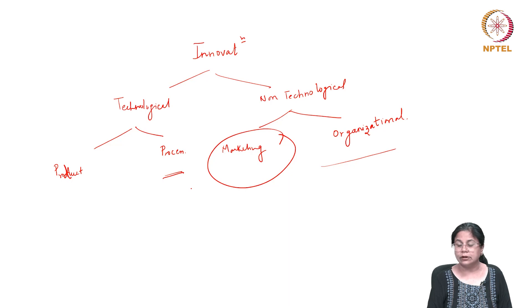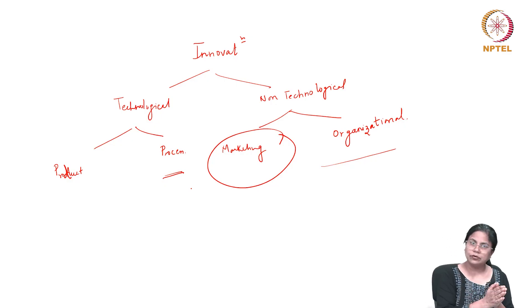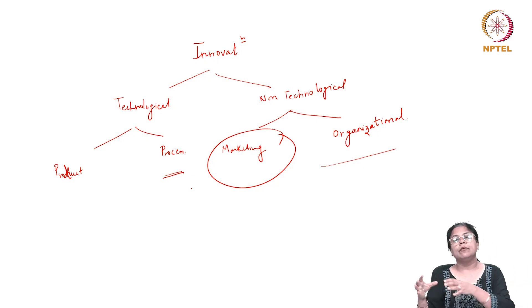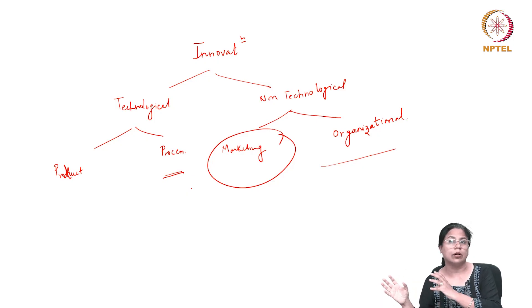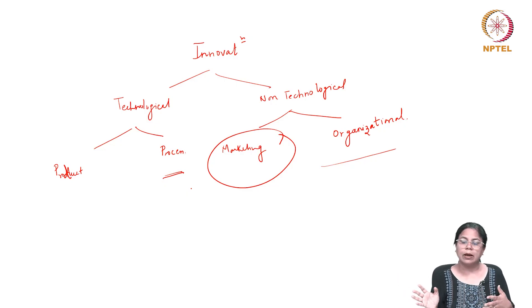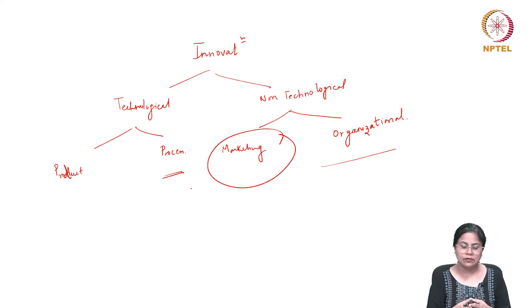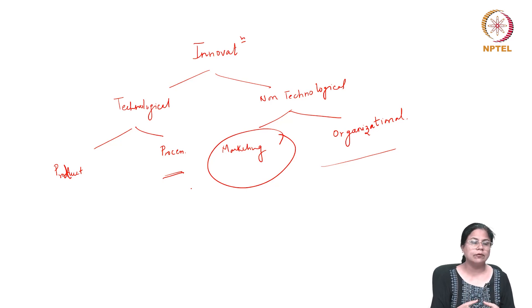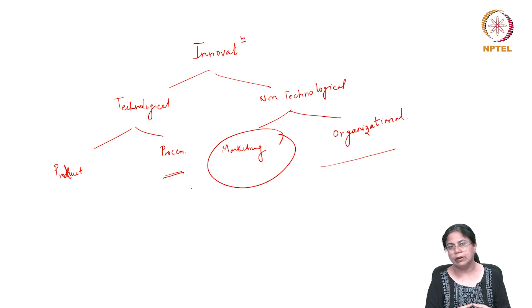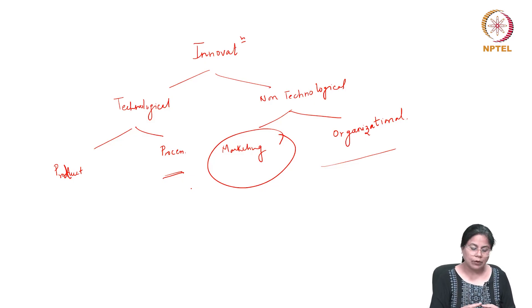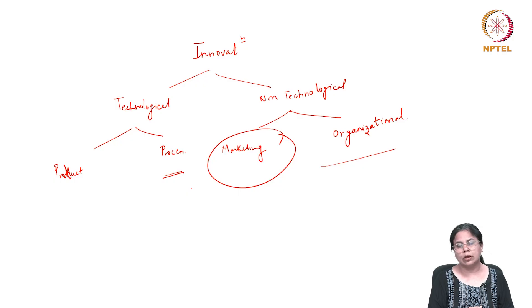Broadly, one way to understand the different types of innovation is to define them with respect to technological and non-technological innovation. In technological innovation, we look at product and process innovation; in non-technological, we look at marketing and organizational innovation. We often have the impression that marketing and organizational innovation may not be that prevalent, which is not correct. In fact, they are extremely prevalent — even in large firms and small and medium enterprises. Many developing and least developed countries also exhibit much more marketing and organizational innovation, either to adopt or absorb products coming from different markets or because it is an easier way to make a profit.